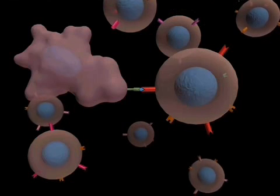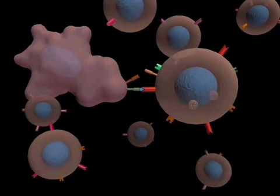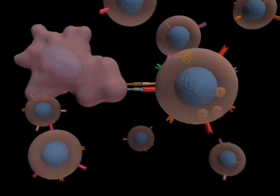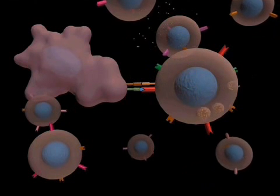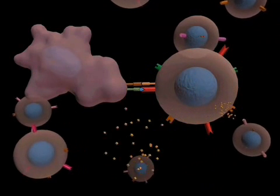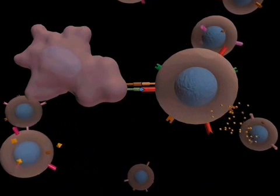There are also crucial interactions between pairs of co-stimulatory molecules on the surface of each of the two cells. In addition to being able to bind interleukin-2 using its new receptor, the T-cell is now also able to produce its own interleukin-2, enabling it to stimulate itself.